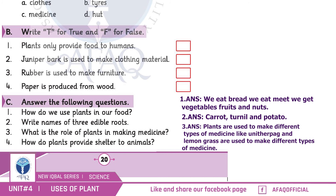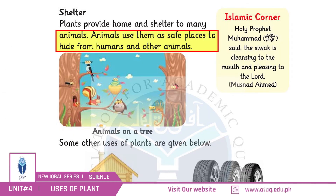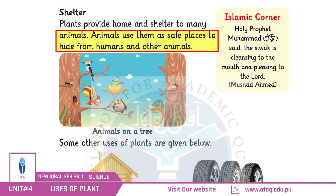Question number four: How do plants provide shelter to animals? Animals use plants as safe places to hide from humans and other animals. Mashallah, excellent!